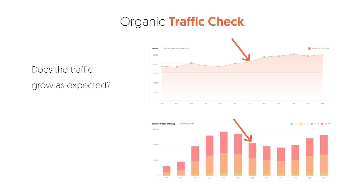Then go to Ubersuggest and type in your domain name. It'll take you to an overview report under the traffic analyzer. If you're seeing more traffic over time, that's great. If you have a new website and haven't done much SEO, you're probably going to see no results, and that's okay — as you implement changes, your numbers will go up. You'll rank for more keywords, which is what the bottom graph shows, and you'll get more traffic from Google, which is what the top graph shows. You can also put in competitors to compare how you're doing to your competition over time.